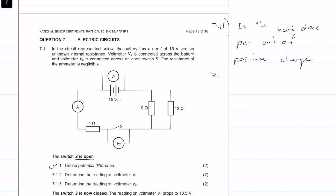Question 7.1.2: determine the reading of voltmeter V1. The circuit is open, so it's reading the voltage between the two cables connecting it — that would be the voltage of the cell, or EMF of the battery, which is 15 volts.